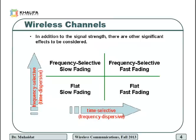Let's go back to our chart. These dips or fades are caused by the reflections we talked about when we discussed delay spread in the previous video. These reflections cause cancellation of certain frequencies at the receiver.